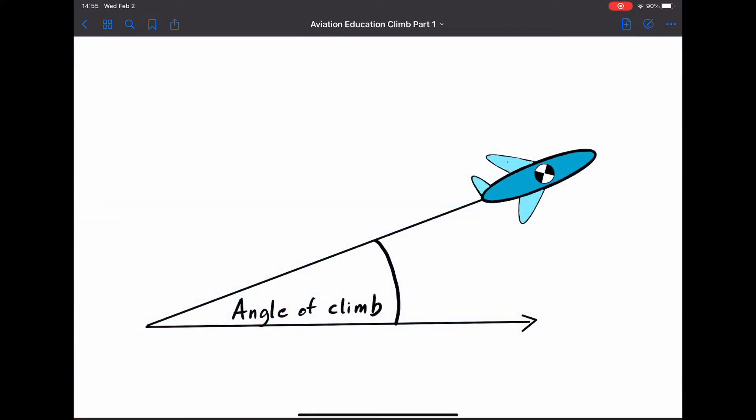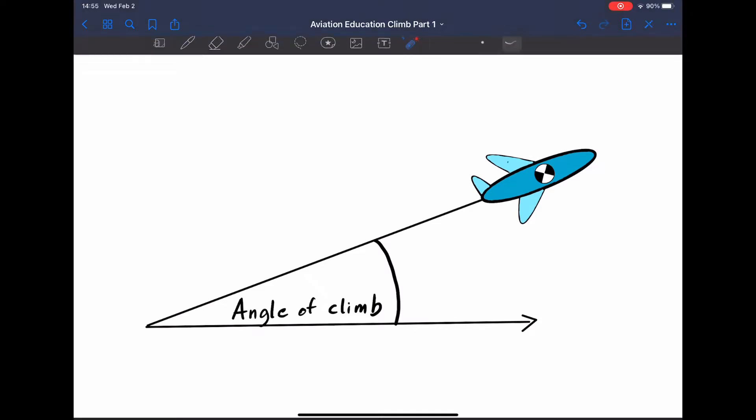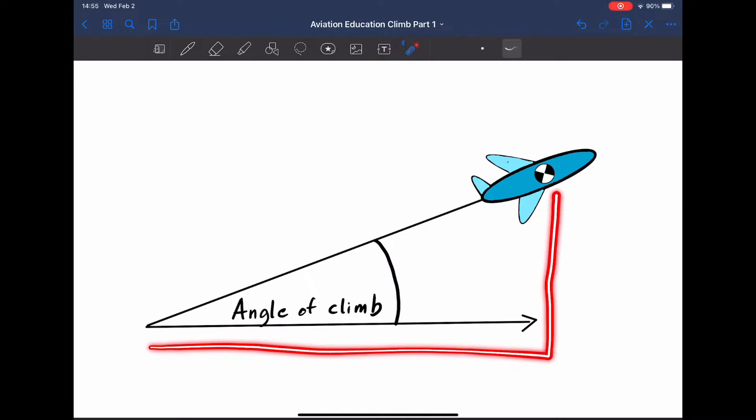There are two general ways that we can classify climb. Number one, angle of climb. For a certain horizontal distance of travel, you get a certain vertical distance of climb.